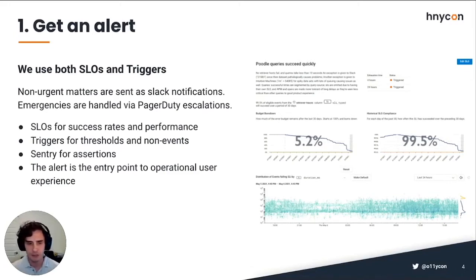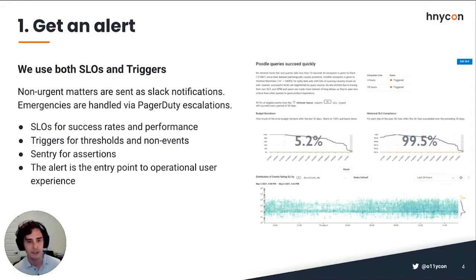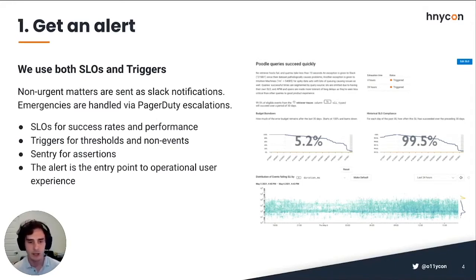Internally we use both the SLOs and triggers features of the platform to get notified when something goes wrong. Sometimes alerts come from customers, from the pollinators channels, or from customer success, but most of the time we try to cover everything we need using both SLOs and triggers.